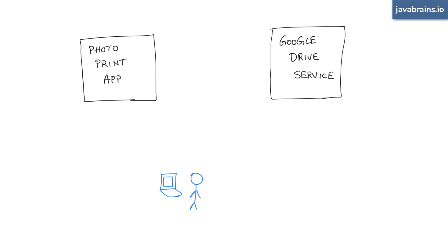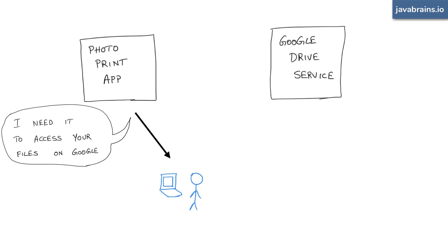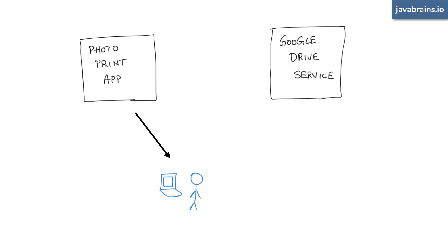Here's something you could do: ask the user for their Google ID and password. You say, hey user, do you want me to print your photos from Google Drive? Well, Google doesn't give me access, so just give me your Google ID and password and I'll log into your Google account and access your photos. Will this work? It'll work in theory, but do you think users will hand you that Google ID and password? Probably not — they don't trust you. What they want is access to just certain photos, not their whole Google Drive, email, and everything else. And there's no guarantee the service won't save that password, so while this works in theory, it's not practical.